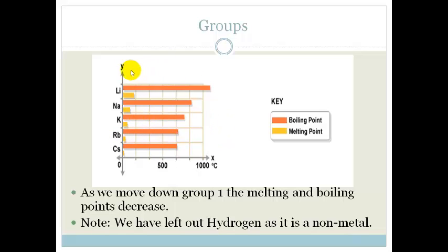In this case, this is group 1, we've left out hydrogen and why? Because we know that hydrogen is special. It is a non-metal and it's only in group 1 on the periodic table because it has one valence electron.